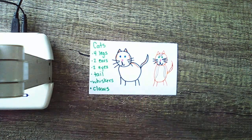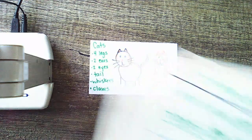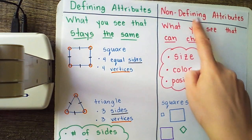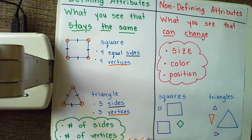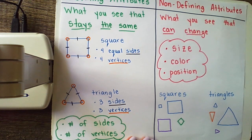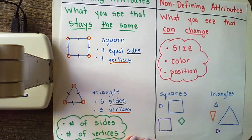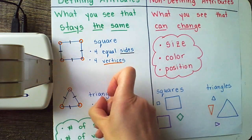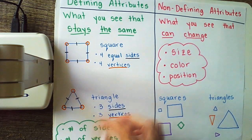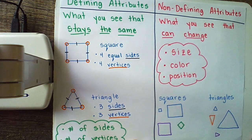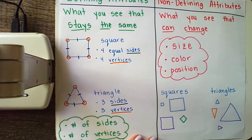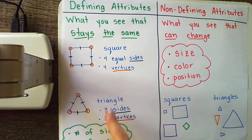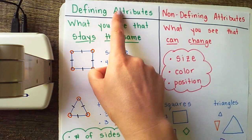Well, the same thing is true for shapes. Shapes have attributes, and some of those attributes are defining and some of those attributes are non-defining. Defining attributes are the things that you see that stay the same — for example, the number of sides and the number of vertices. Remember from kindergarten, vertices is just a fancy name for corners. So I know this shape right here is a square because squares always have four equal sides and four vertices. That's how I know it's a square. I have another shape down here — that shape is called a triangle. How do I know? Because the defining attributes of a triangle are that it has three sides and three vertices. The number of sides and the number of vertices are the defining attributes of shapes.